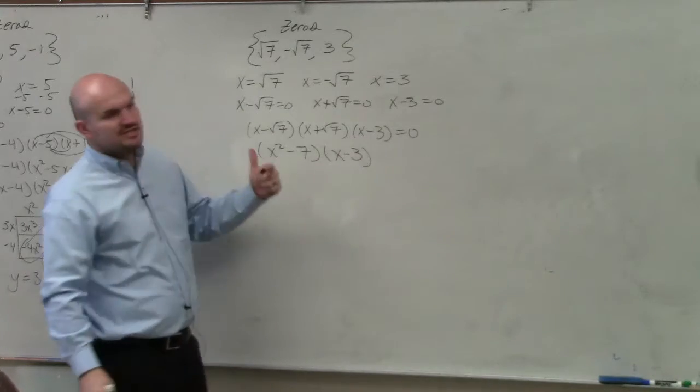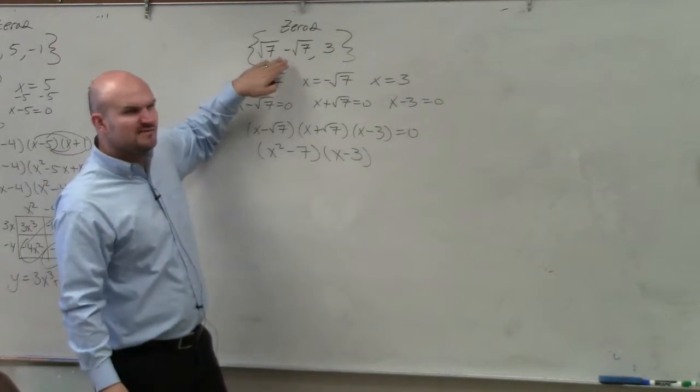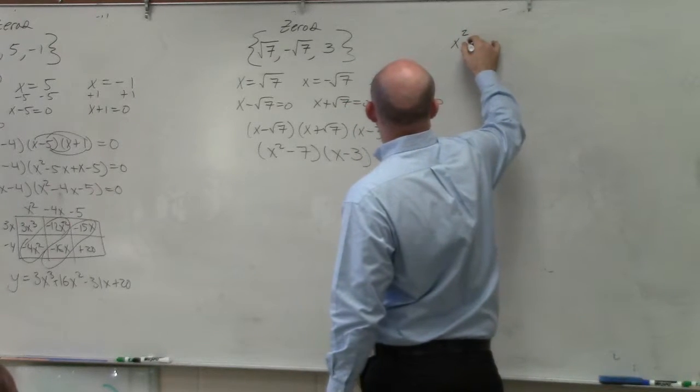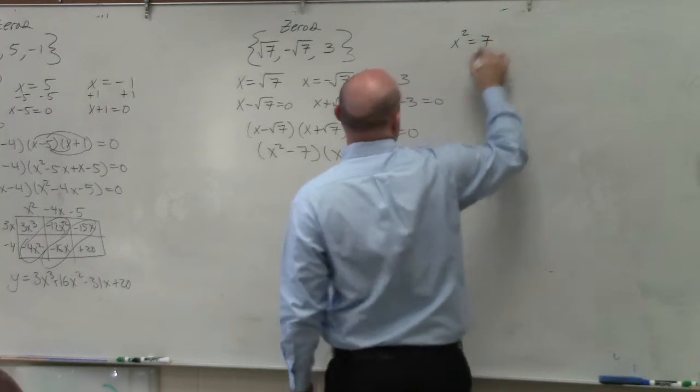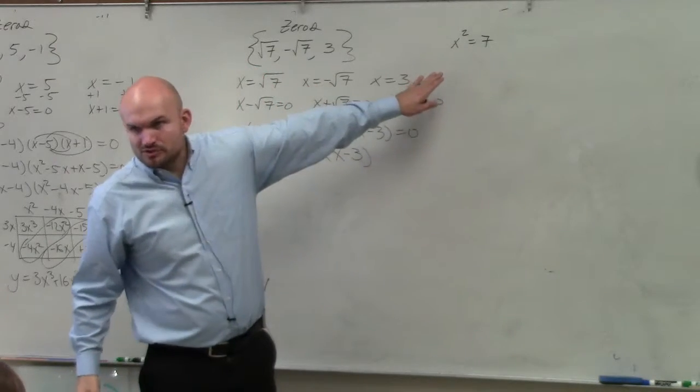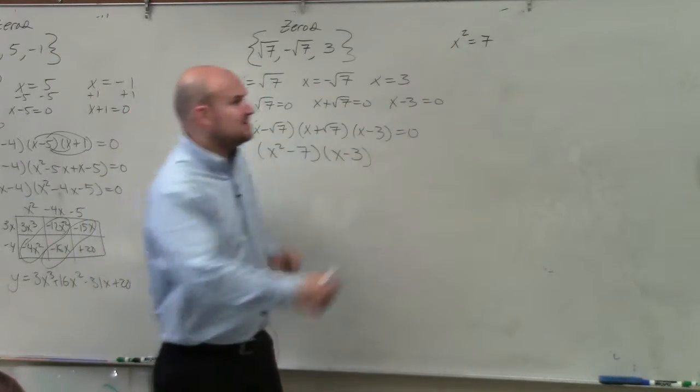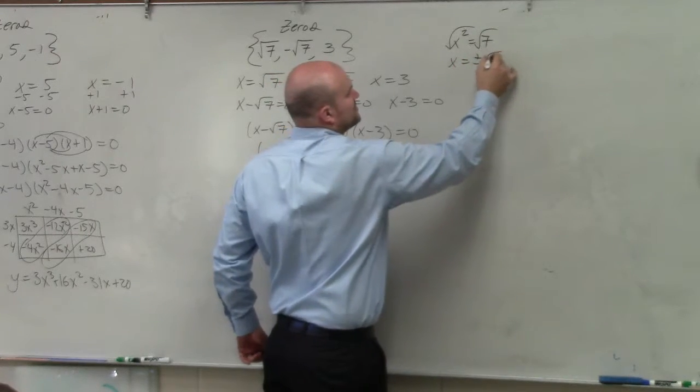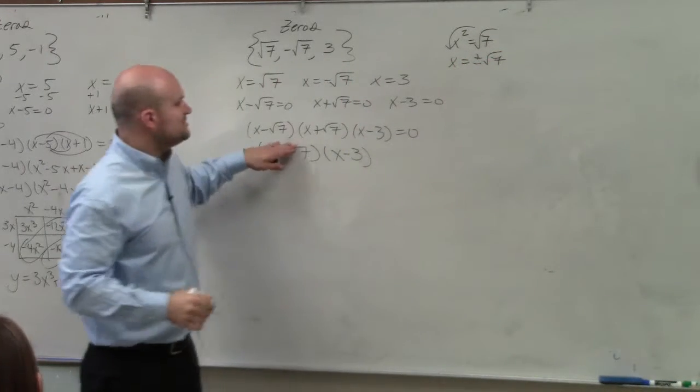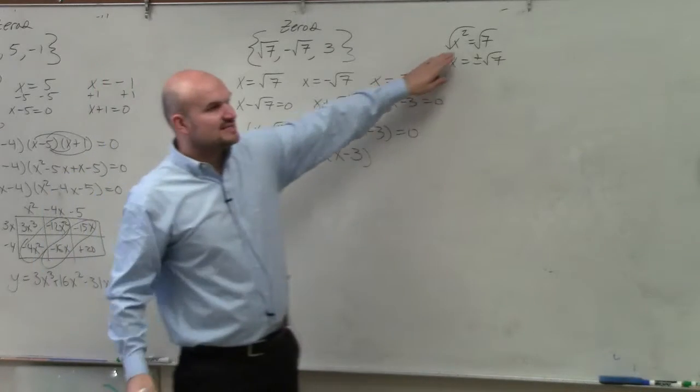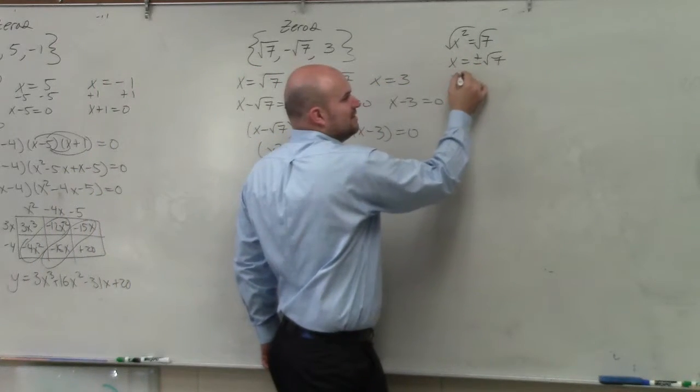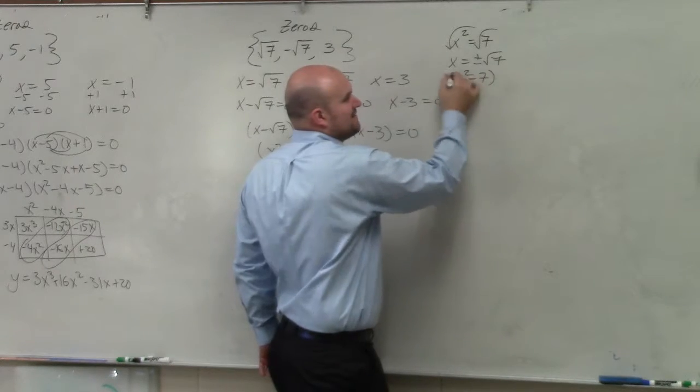Now, another little simple trick you guys can see, whenever you have the square roots, doesn't it make sense? x squared equals 7. If you were to solve this, what would you do? You take the square root on both sides, and you get x equals plus or minus 7, which gives you those two factors. So, do you guys see how, knowing if you have plus or minus the square root of 7, that x squared minus 7 is a factor?